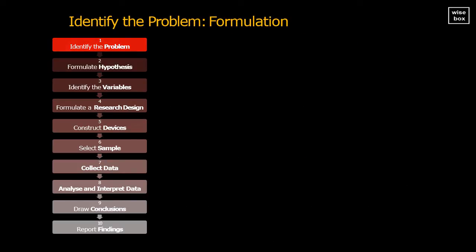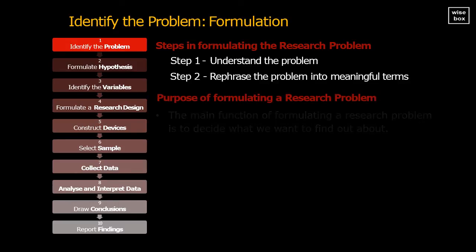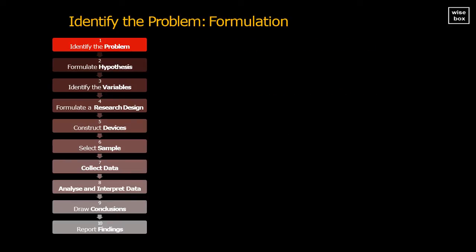After identifying the problem, we then need to formulate that research problem. The first step is to make sure we clearly understand the problem. Then secondly, we must rephrase the problem into meaningful terms. Formulating the research problem allows us to decide what we want to find out about. Here are several factors to consider while choosing a research problem.